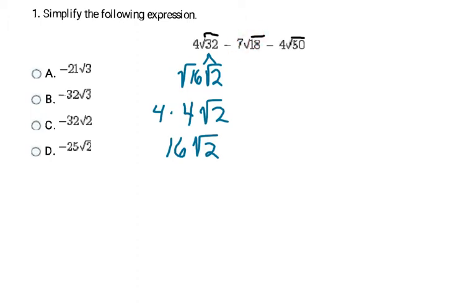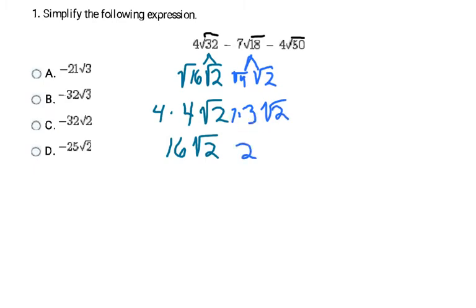For 18, the largest perfect square that divides into it is 9, since 9 times 2 equals 18. The square root of 9 is 3, and we still have that 7 out front, so 7 times 3 is 21√2. We're subtracting, so that remains subtracted. For 50, it breaks down as 25 times 2 — 25 is the largest perfect square. The square root of 25 is 5, and with the 4 out front, 4 times 5 gives 20√2.